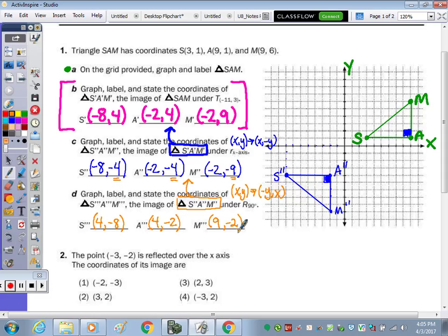And remember, rotation of 90 is in a counterclockwise direction. So we should go from quadrant 3 to quadrant 4. Let's graph and see. So 4, negative 8: 1, 2, 3, 4, 1, 2, 3, 4, 5, 6, 7, 8. So there's S double prime. 4, negative 2, so still over 4, just now down 2. So there's A: 1, 2, 3. And then 9, negative 2. So that was 4, 5, 6, 7, 8, 9, down 2. So here's M double prime.